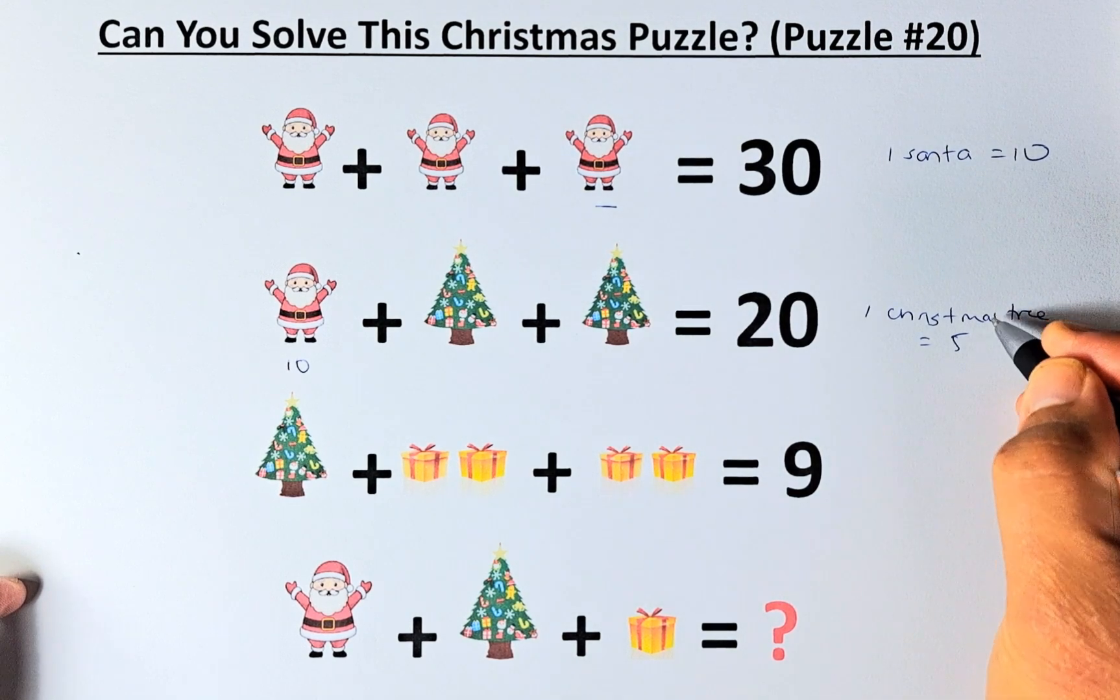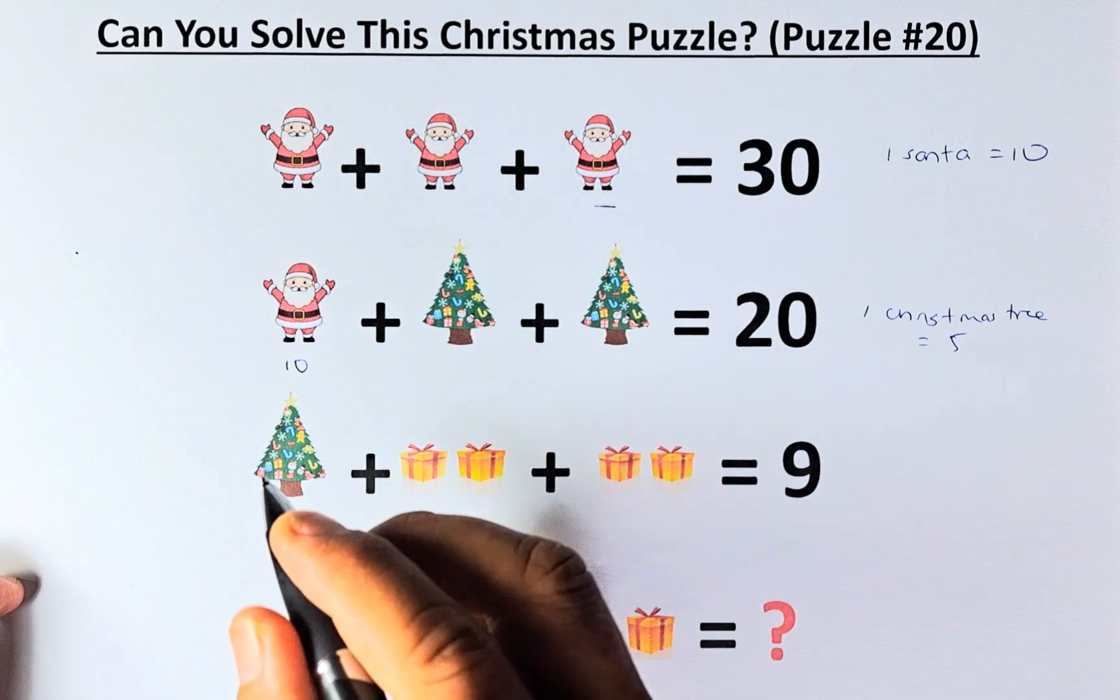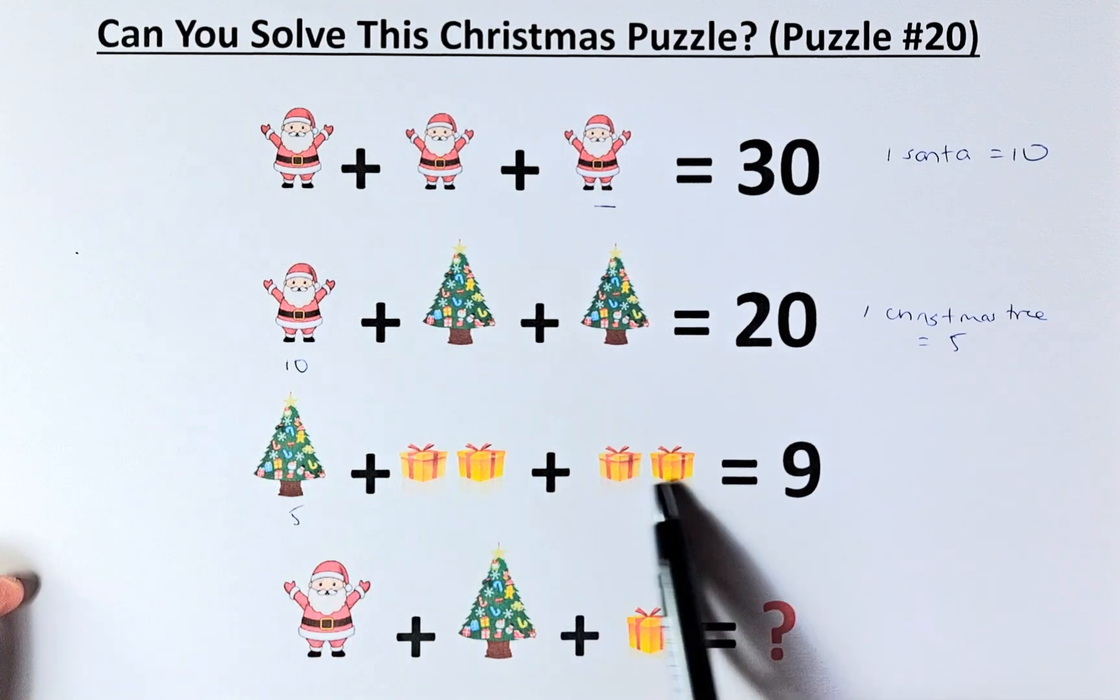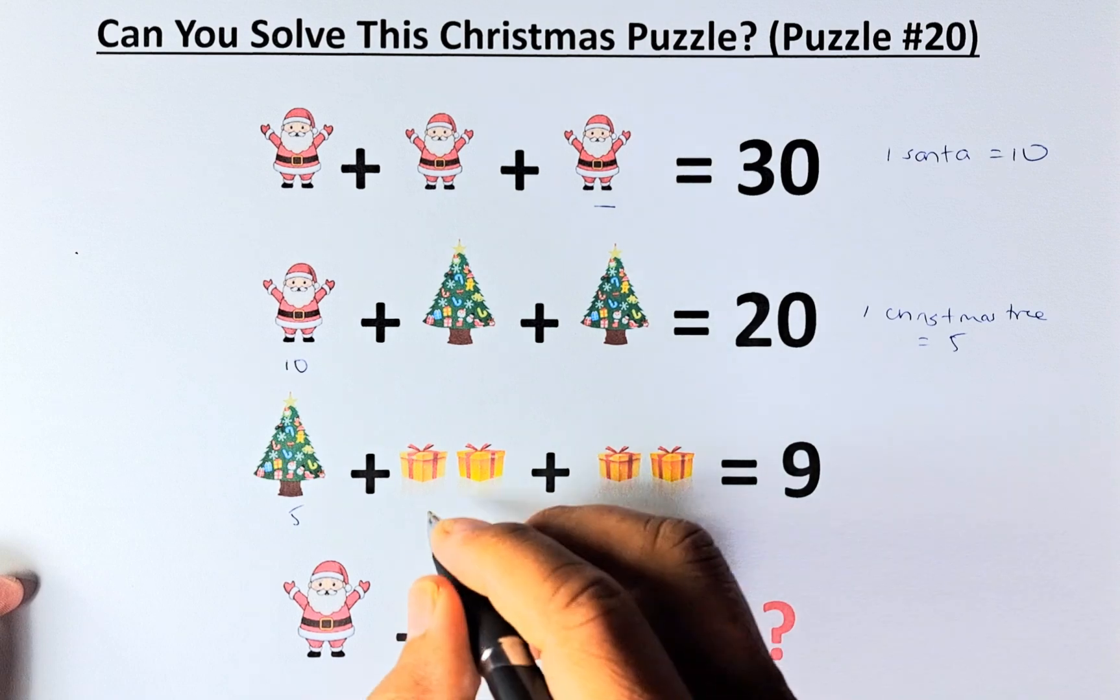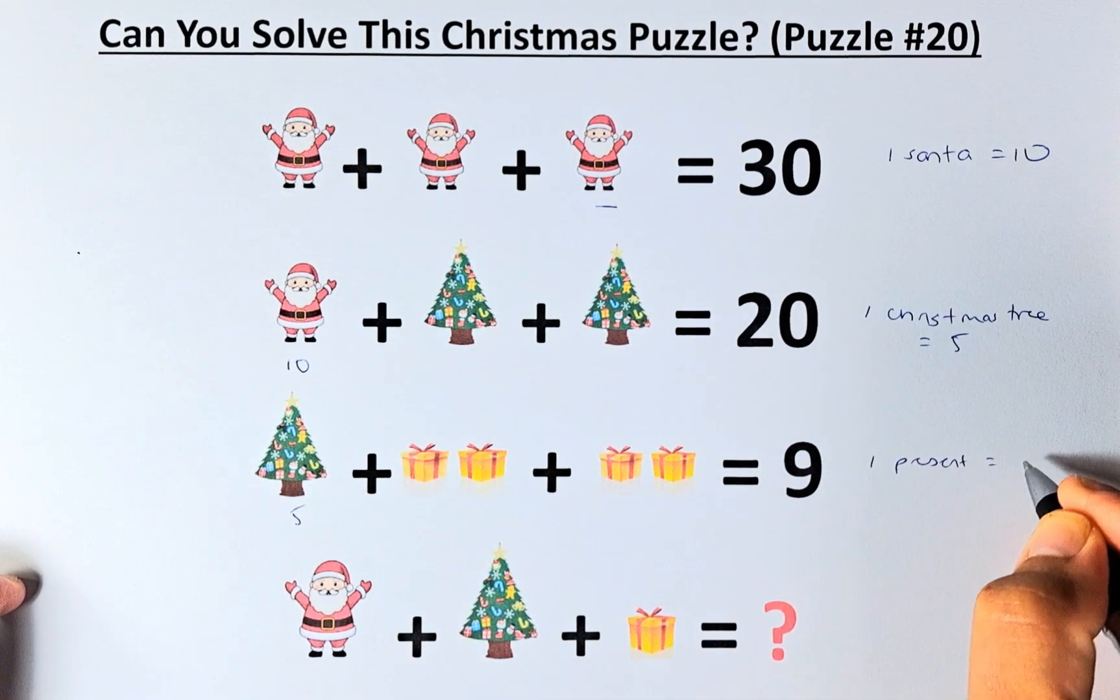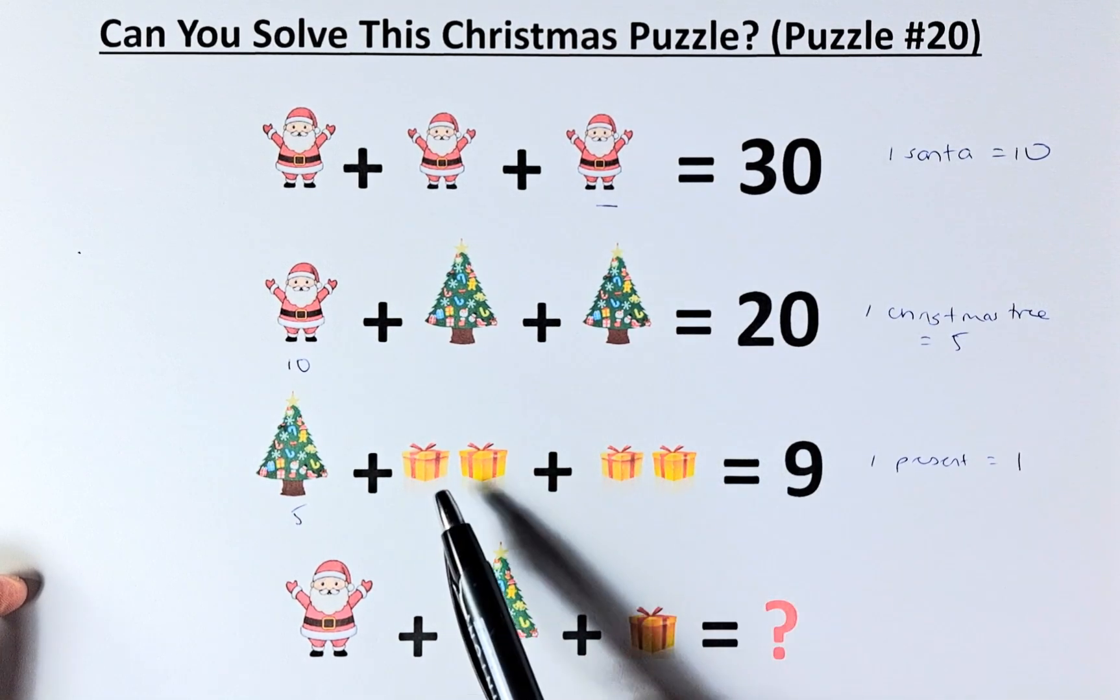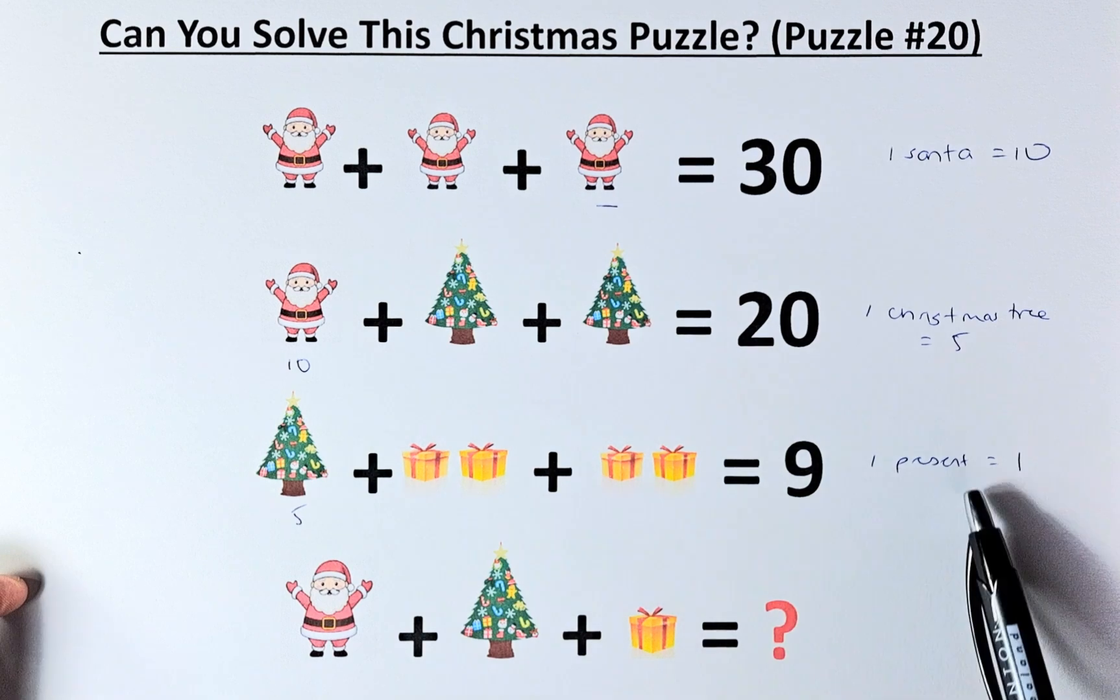Now we solve for the present. We know the Christmas tree is 5. The equation shows 5 plus 4 presents equals 9, so 1 present equals 1.